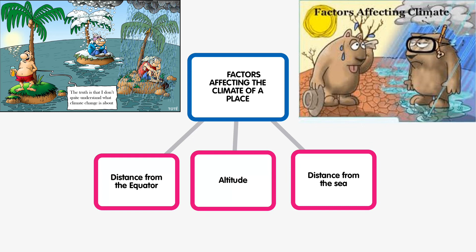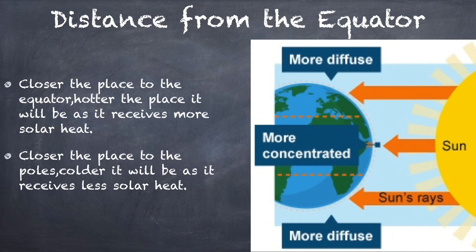Different places in the world have different types of climate. There are many factors that affect the climate of a place, but in this video we will study only three: first, the distance from the equator; second, altitude; and third, distance from the sea.